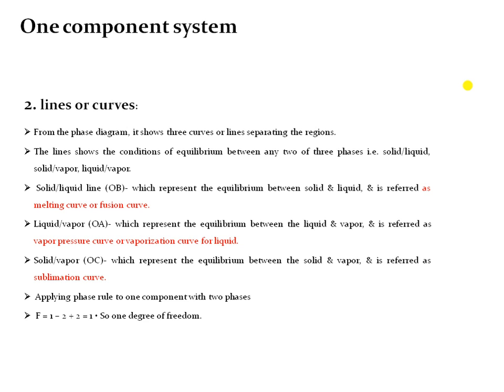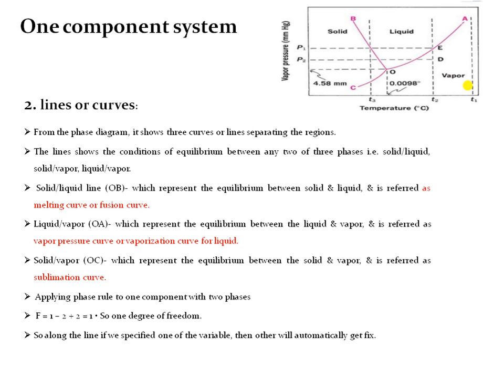So degrees of freedom will be 1 and the system is known as univariant or monovariant. If we specify one variable, the other will automatically get fixed. Line OC is the sublimation curve, line OA is the vaporization curve, and OB is your melting point curve or melting curve.